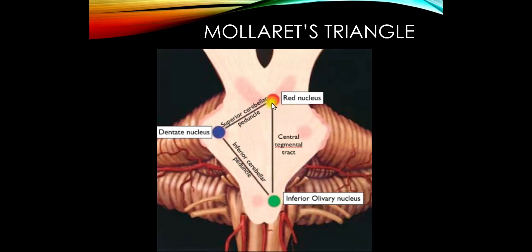The connection between the red nucleus, inferior olive, and cerebellum is called Molaret's triangle. The red nucleus has a role in cerebellar circuitry, and a lesion of the central tegmental tract gives the patient palatal myoclonus. The fibers from the inferior olive to the cerebellum are climbing fibers. Mainly the globose and fastigial nuclei communicate with the red nucleus here.